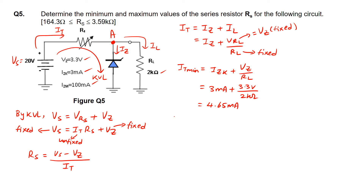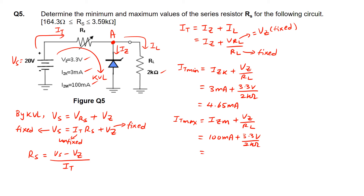To calculate It_max, the Iz value in the KCL equation has to be Izm. Izm is given as 100 mA, plus Vz over RL (1.65 mA), so It_max equals 101.65 mA.